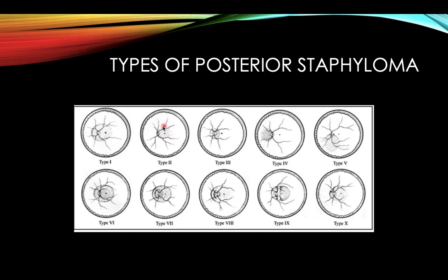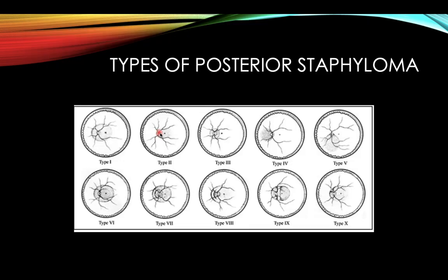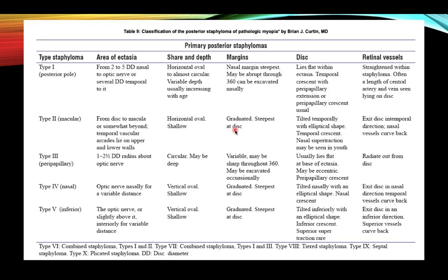Type 2 extends from the disc to the macula and somewhat beyond, with the temporal vascular arcades setting the upper and lower limits. Type 3 is the peripapillary type, with a one to two-and-a-half disc diameter radius about the optic nerve.